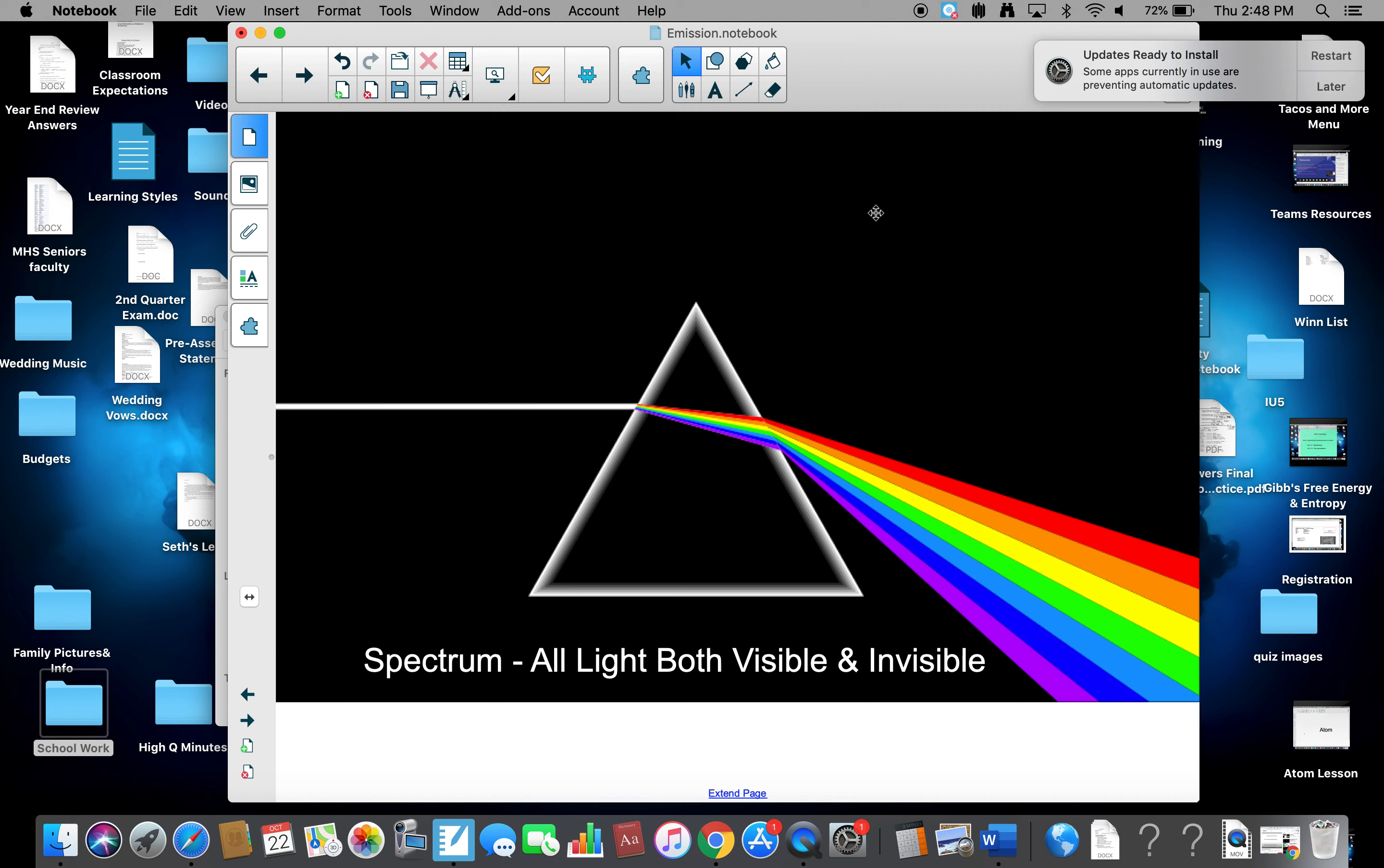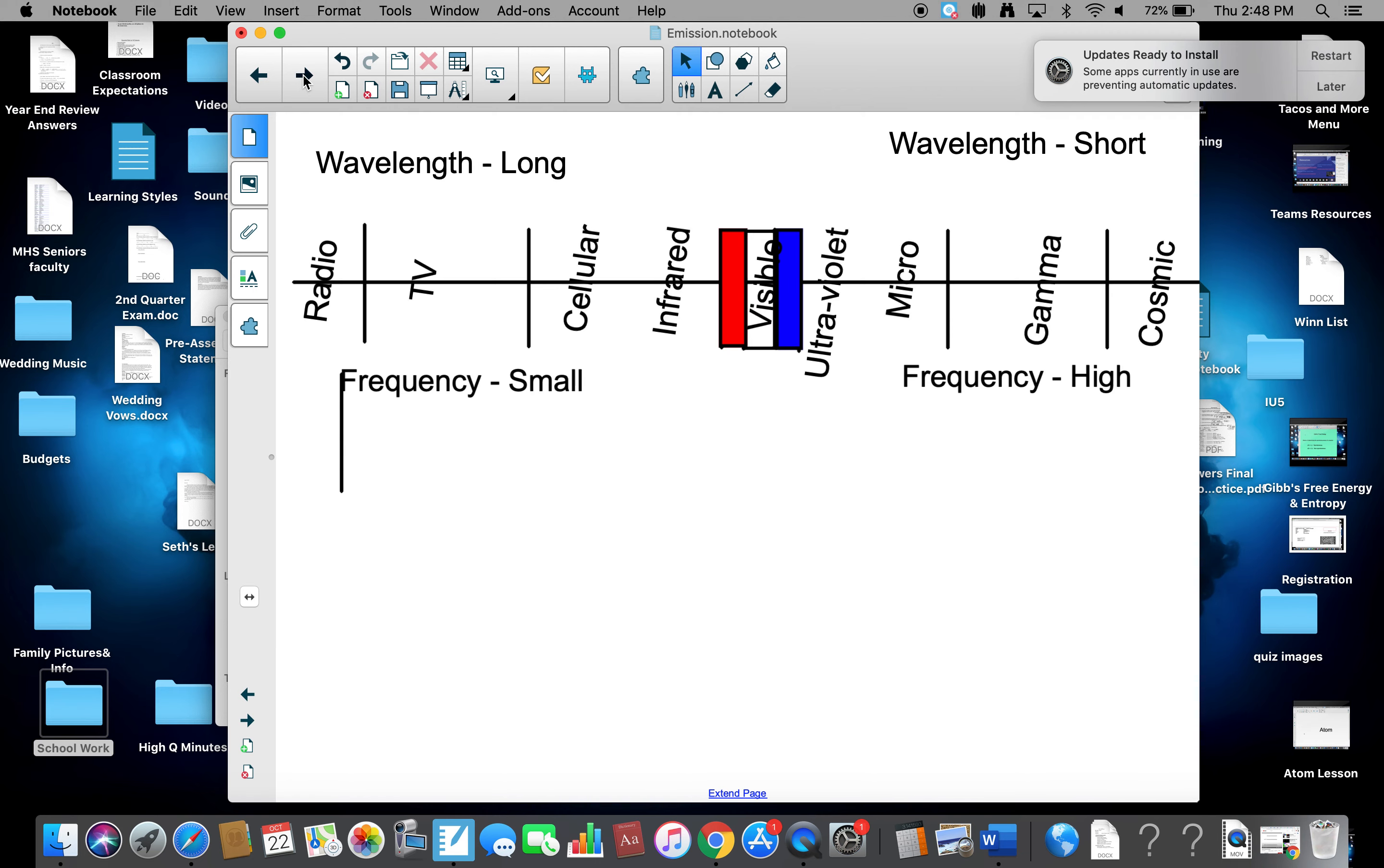We already know where protons and neutrons are, but we have to identify where electrons are, and we use that through emissions. Now, the way that we do that is we look at the spectrum.